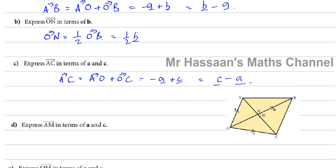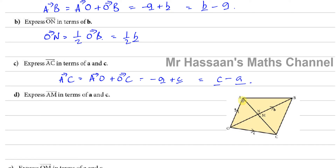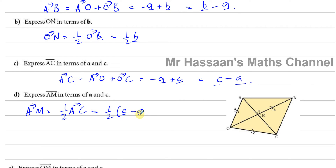Part D: express AM. Since M is the midpoint of AC, AM is half of AC. I already know AC is c minus a, so AM equals ½(c minus a), which I can expand as ½c minus ½a.